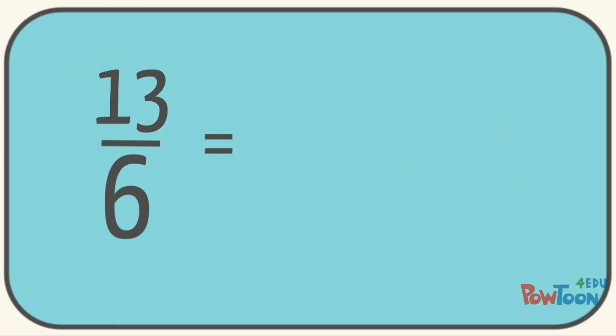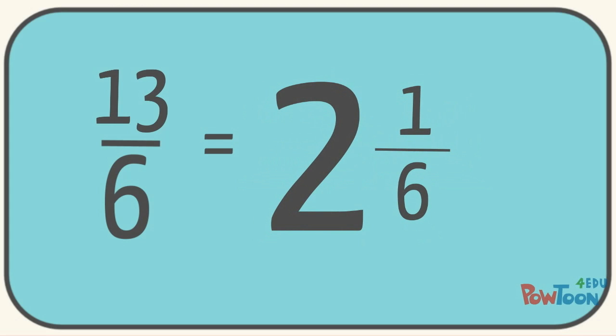13 sixth is an improper fraction so we must convert it to a mixed number. So we take 13 divided by 6. 13 divided by 6 is 2 remainder 1. Now we simply make 2 our whole number and 1 our new numerator keeping the denominator the same. So the answer is 2 and 1 sixth.